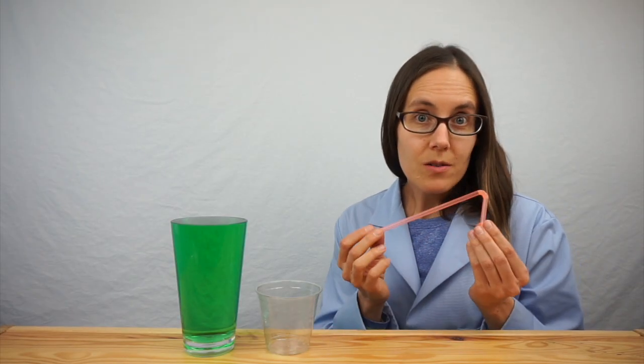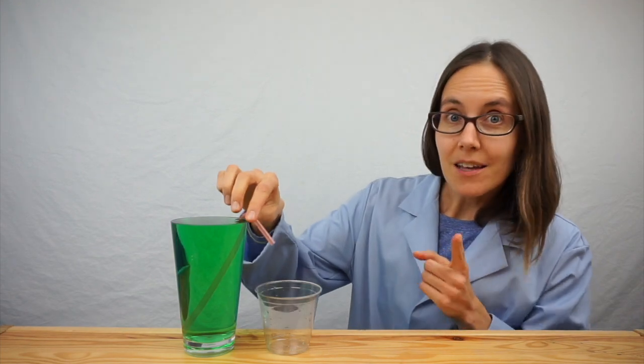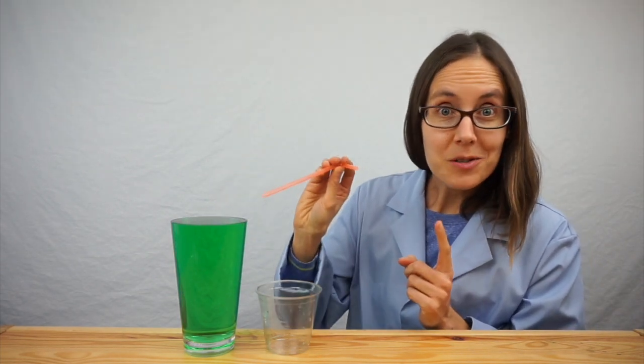To make a straw siphon, all you need is a bendable drinking straw. If you put the drinking straw into the cup of water like this, nothing will happen. But if you cap your finger over the top first and then let go, something will. Here's why.